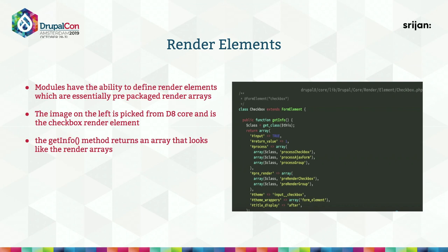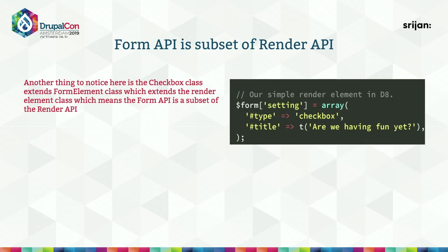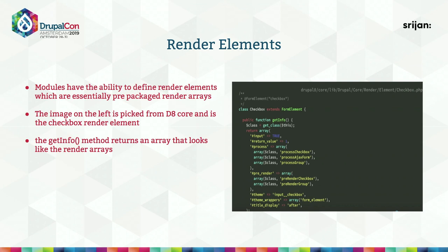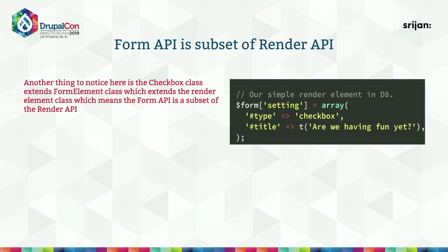There is also a concept called render elements. A basic implementation is a checkbox class from Drupal core, which extends the FormElement class, and the output of its getInfo() function is a render array. Drupal provides this ability to define a set of defaults so you just need to call those elements. Render elements are essentially predefined render arrays with defaults already defined; you only need to specify what you want to override. Notably, the checkbox class extends FormElement, which extends RenderElement — meaning Form API can be considered a subset of Render API.